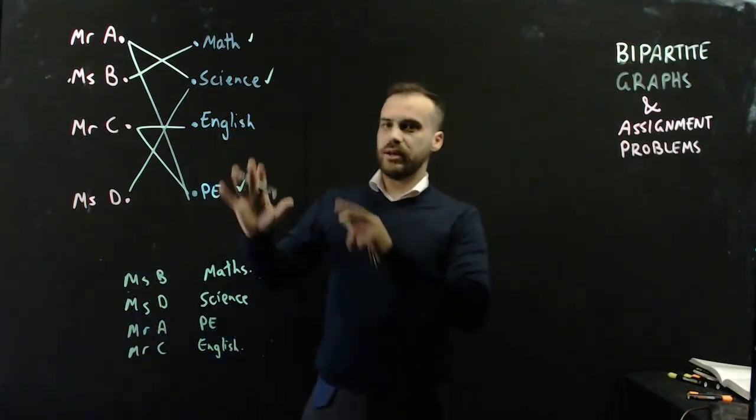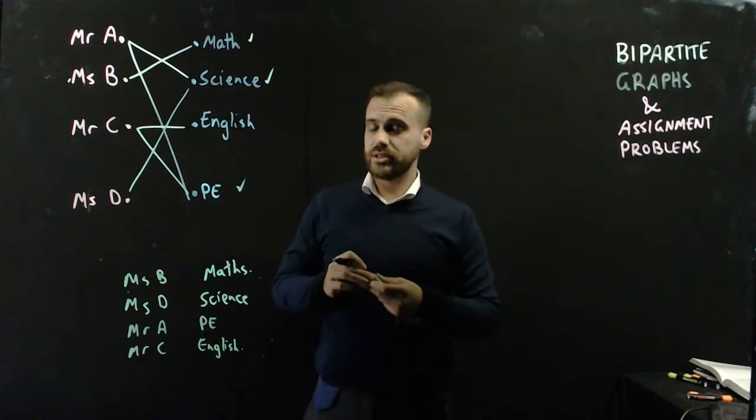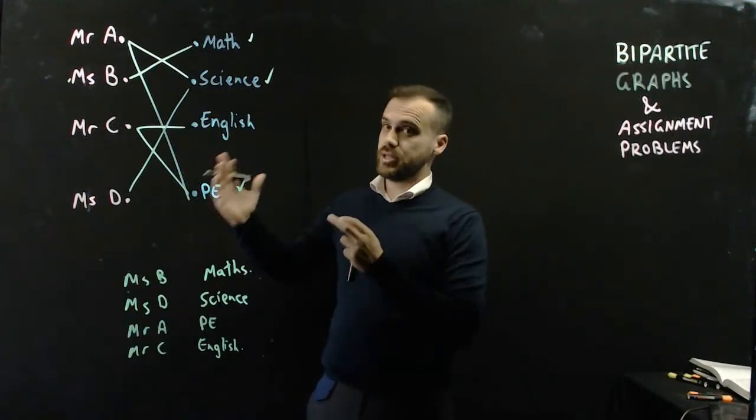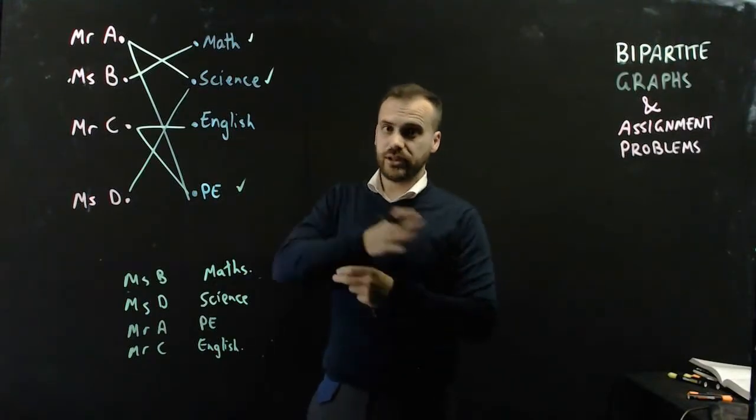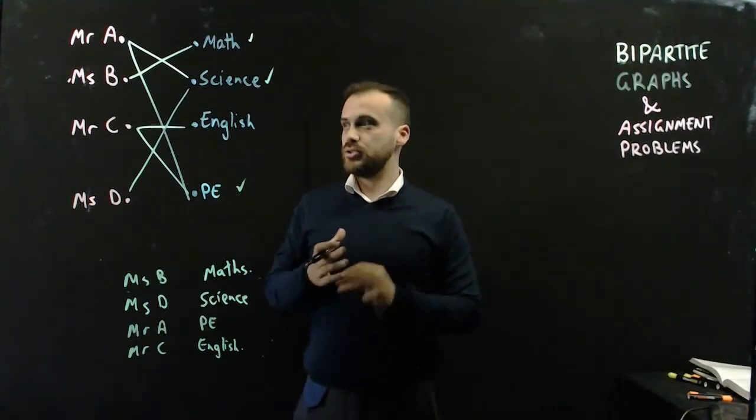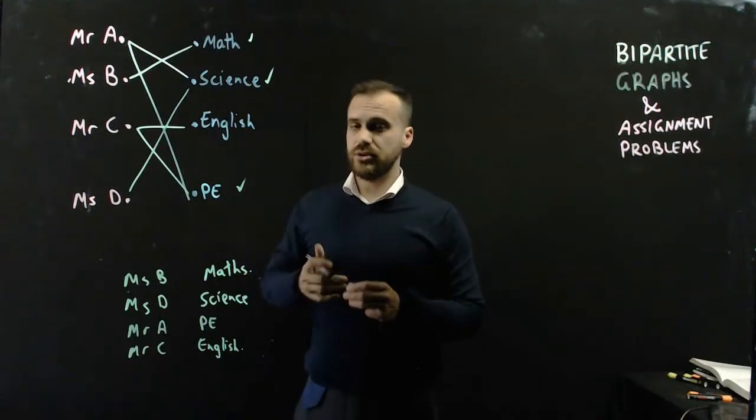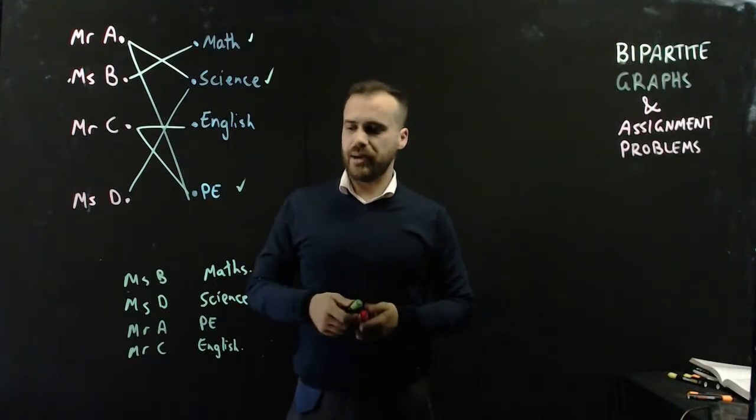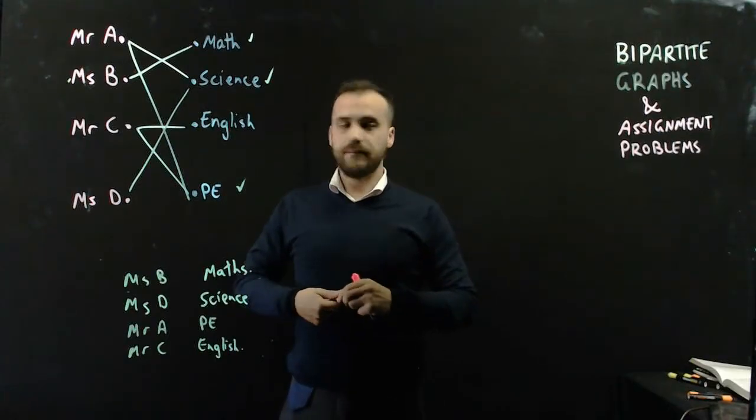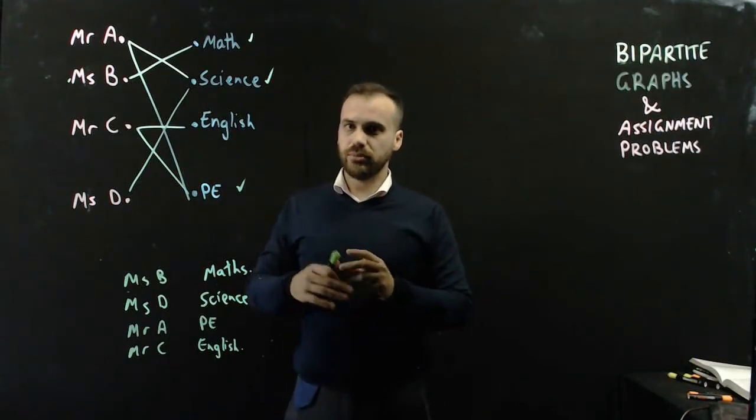Now, that was only four teachers and four subjects. In your school, there might be 60 teachers and 150, there might be like 300 different classes. So, you should find the person in your school whose job it is to do this. They're probably doing it right now for next year. And, give them a pat on the back and tell them, good job. That is what an assignment problem is.